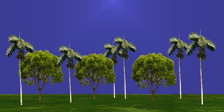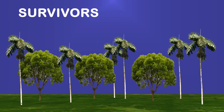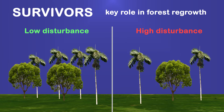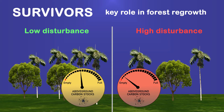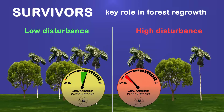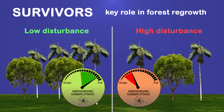Furthermore, our findings highlight the key role that trees surviving selective logging play in forest regrowth. High disturbance intensities reduce survivors' above-ground carbon stocks, and the growth of those stocks is consequently lower.